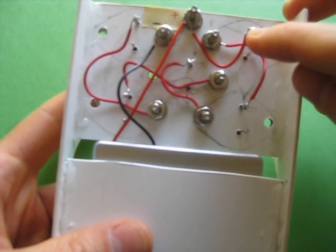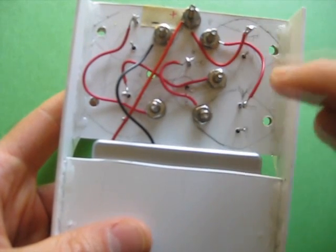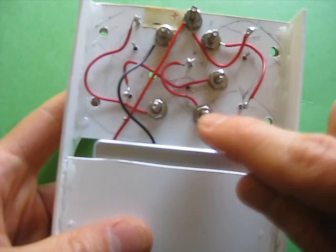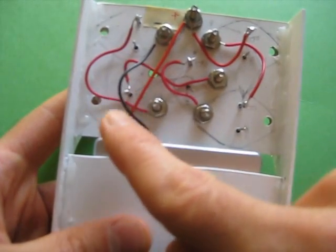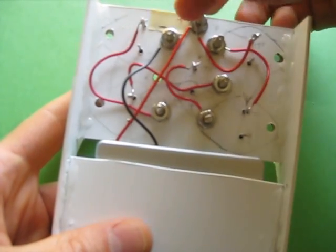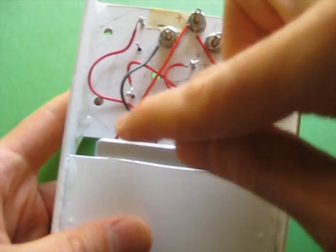That goes to the base of this transistor. Then from the collector of the same transistor, I go to the base of this transistor. Then collector to base, collector to base, collector to base, to collector. And then that's the negative for the calculator.